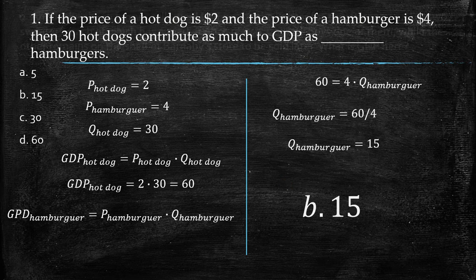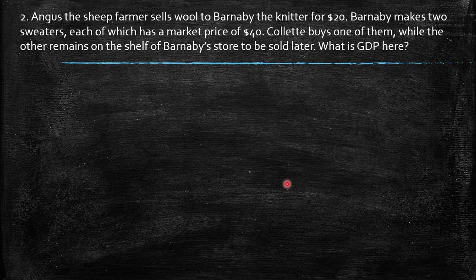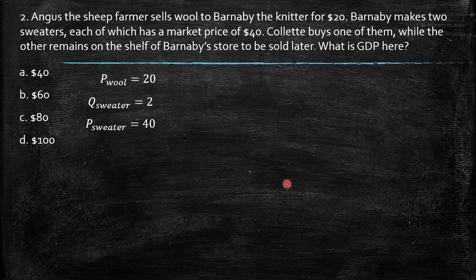Next question: Angus the sheep farmer sells wool to Barnabye the knitter for 20 dollars. Barnabye makes two sweaters, each with a market price of 40 dollars. Colette buys one of them while the other remains on the shelf to be sold later. What is the GDP? The price of wool is 20, quantity of sweaters is two, and price of each sweater is 40.